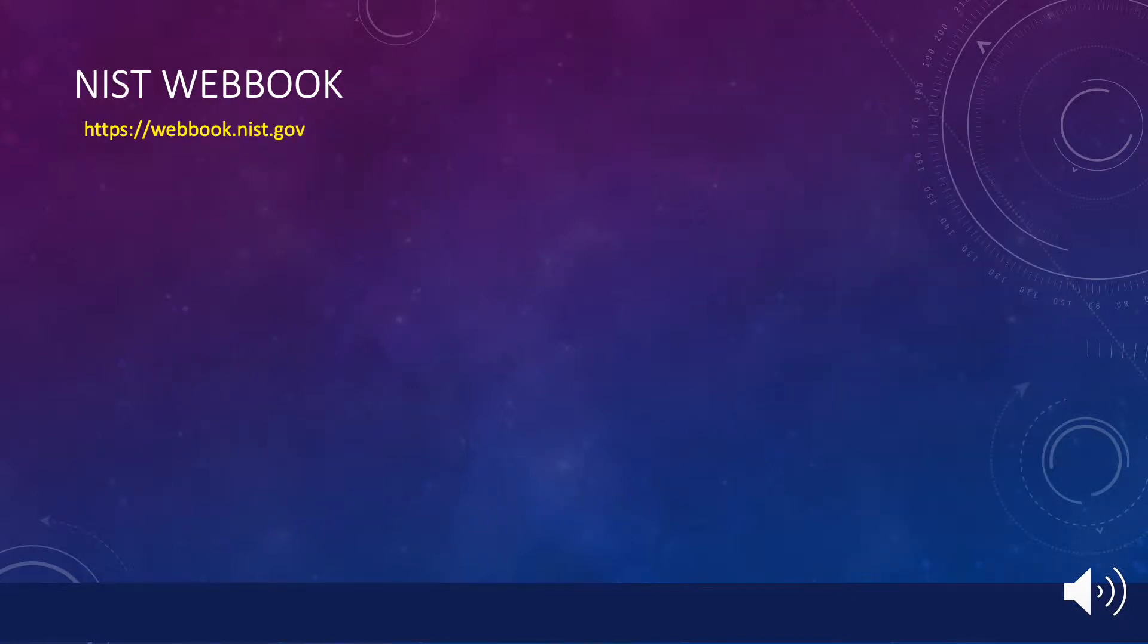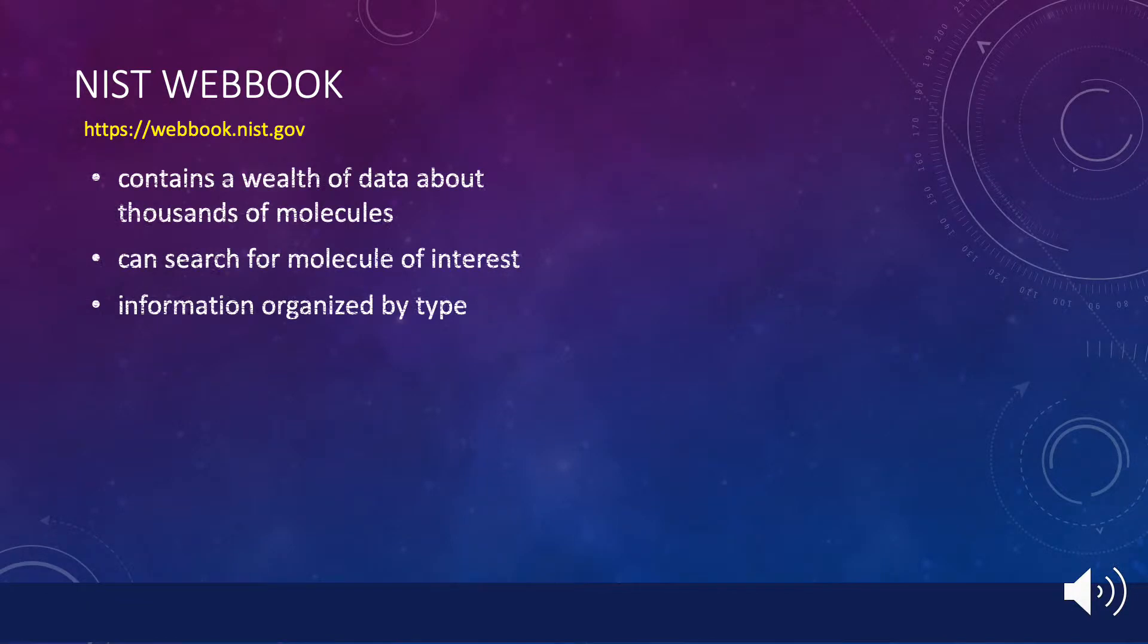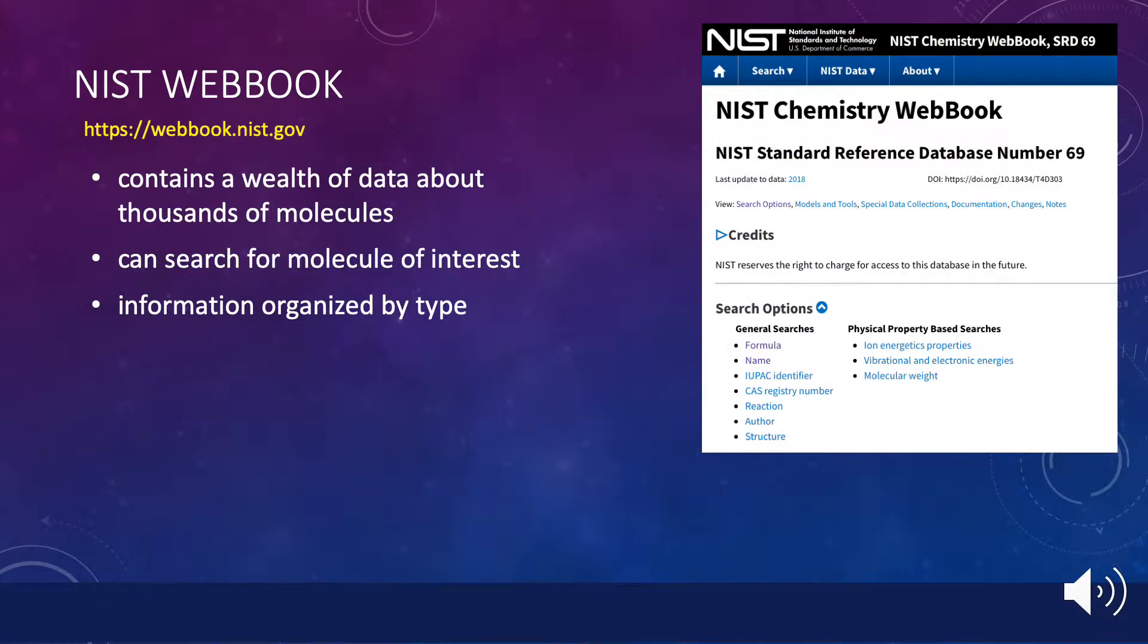Since we do not have a virtual spectrometer handy, we will need to find molecular spectra that have already been measured to use in our analyses. A great place to find this information is the NIST webbook site. When you go to the link shown under the title, the top of the page that you enter will look like this. To search for a particular molecule, we will utilize searches either by name or by formula.